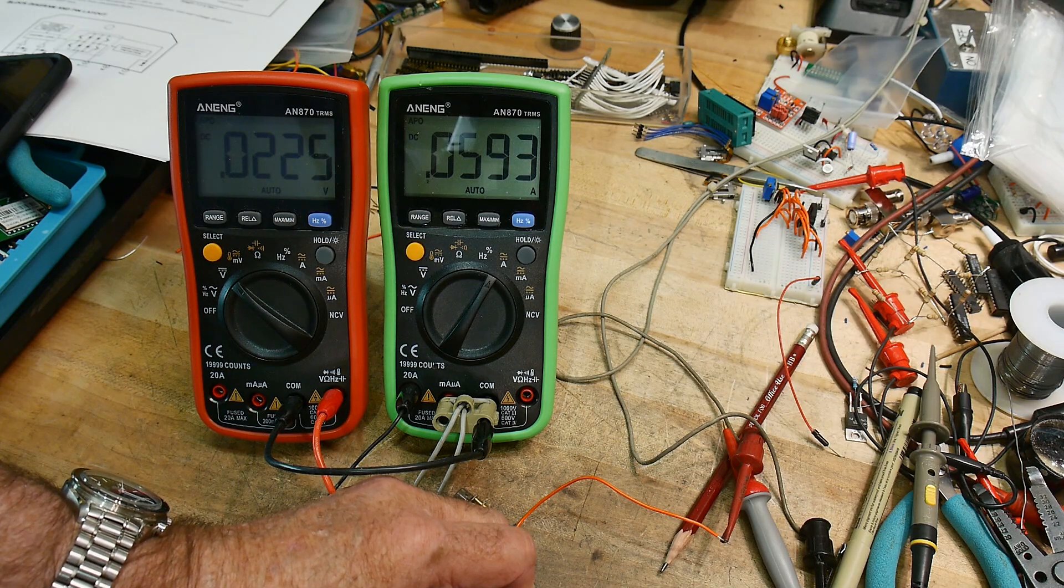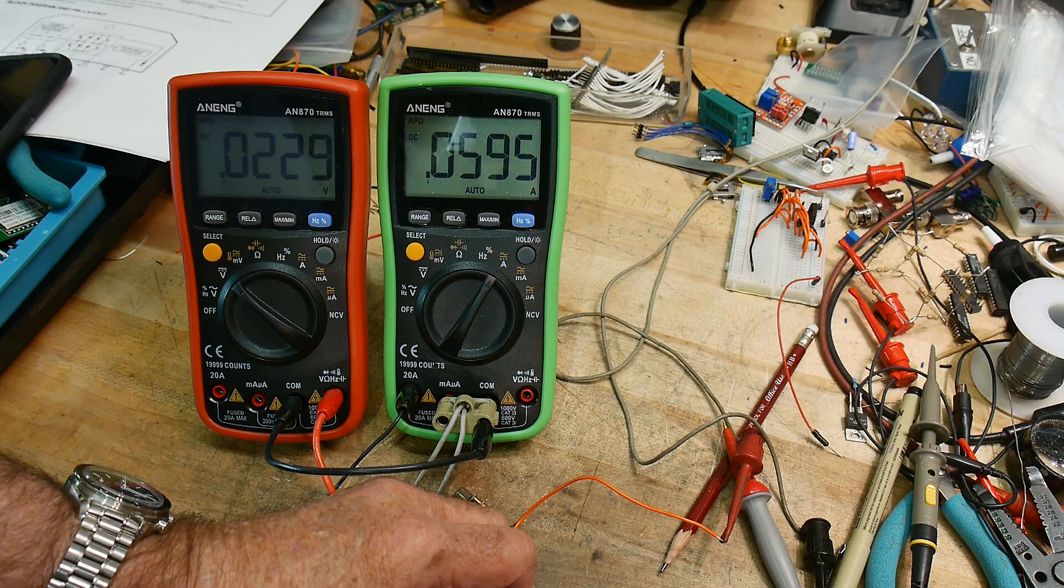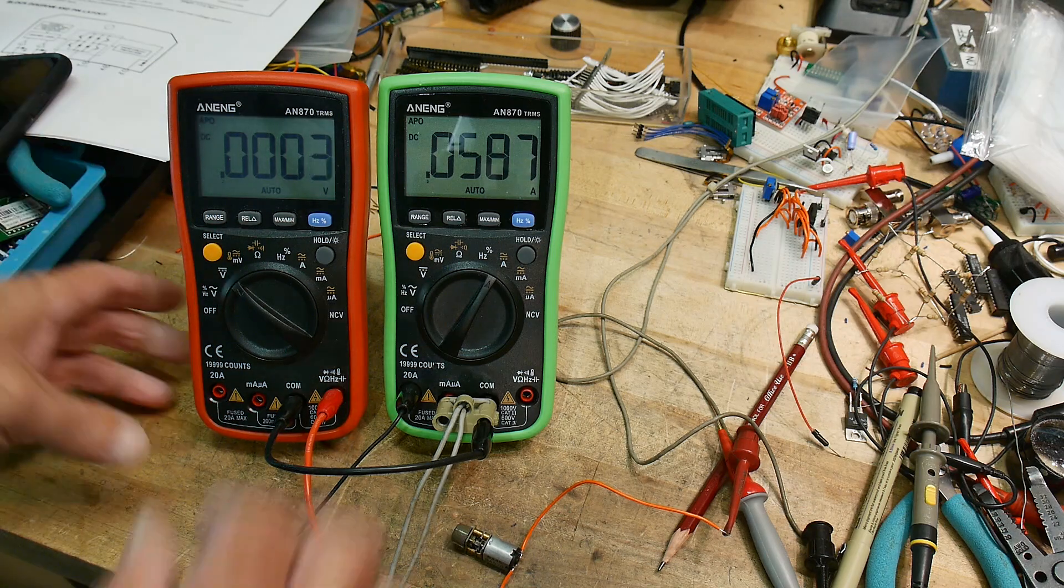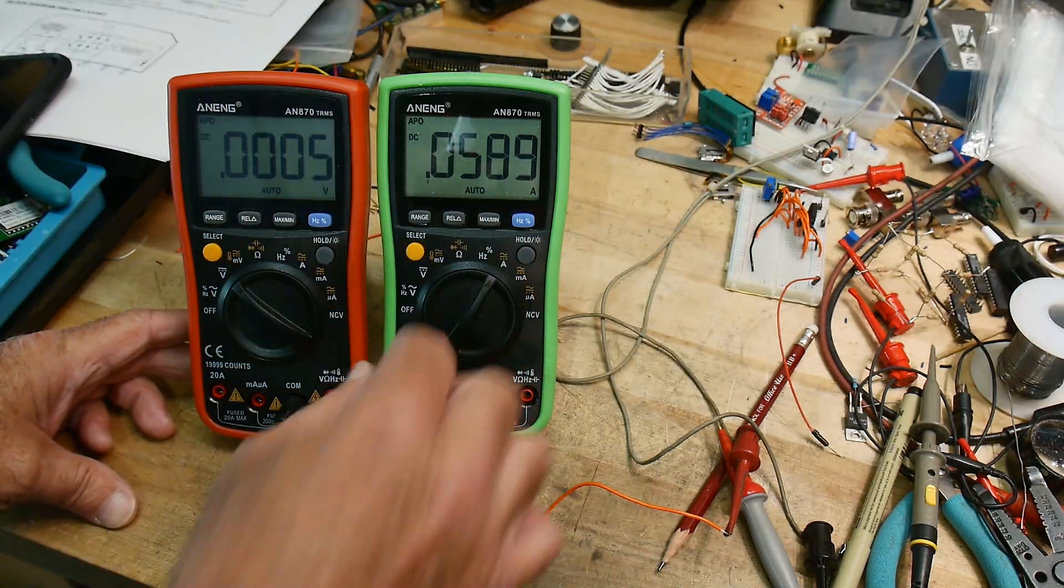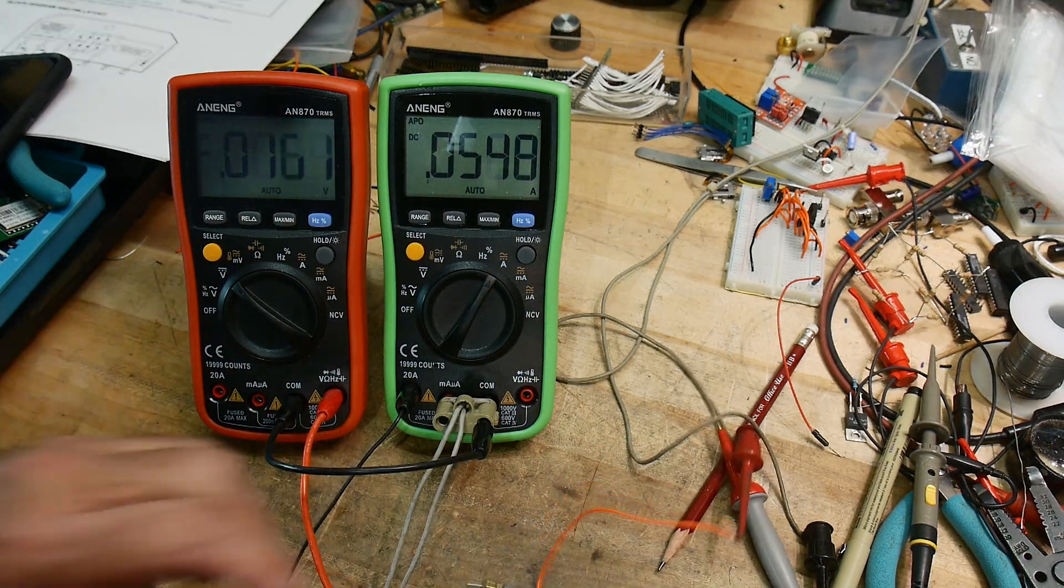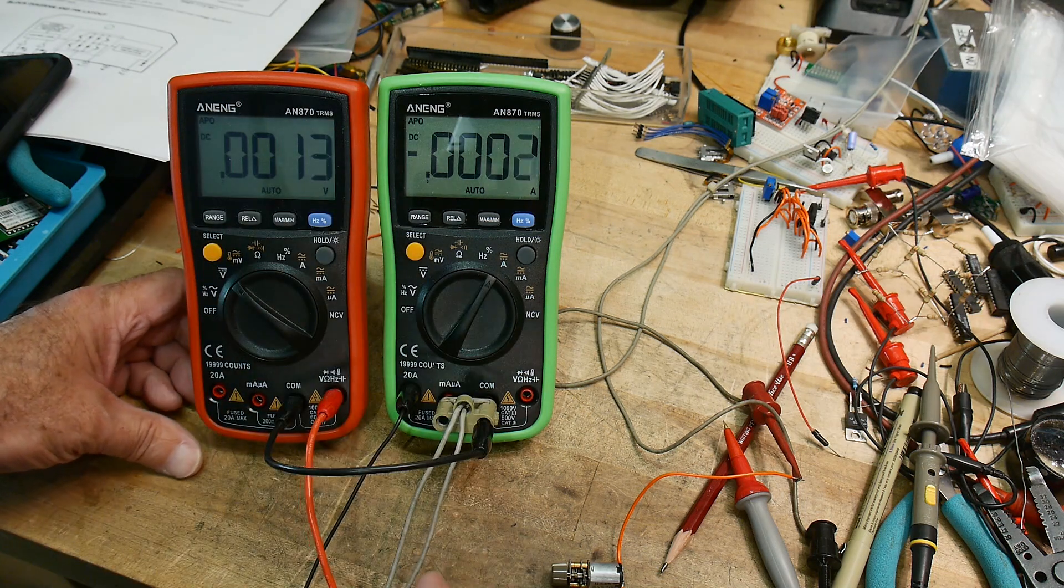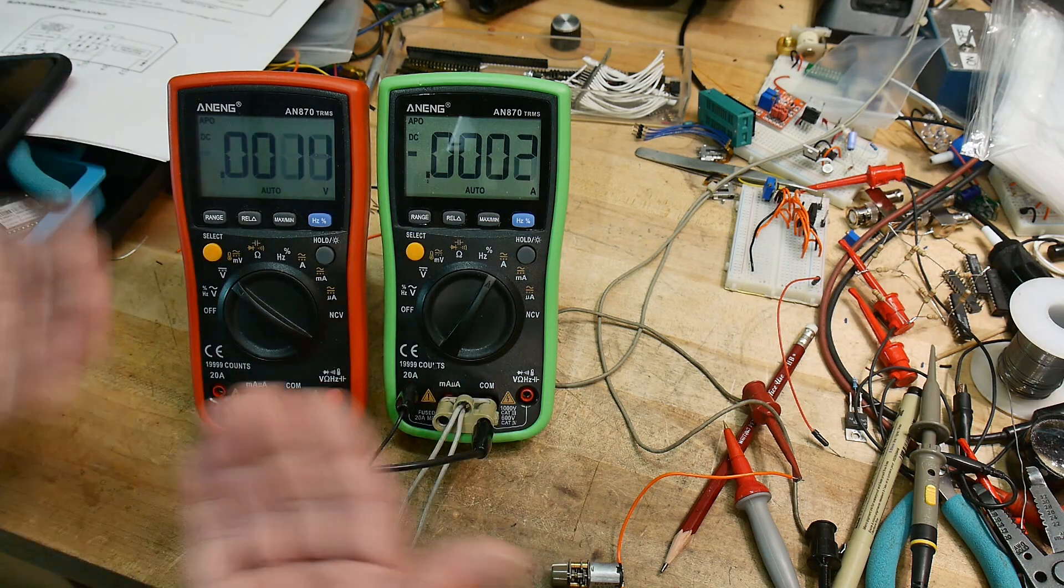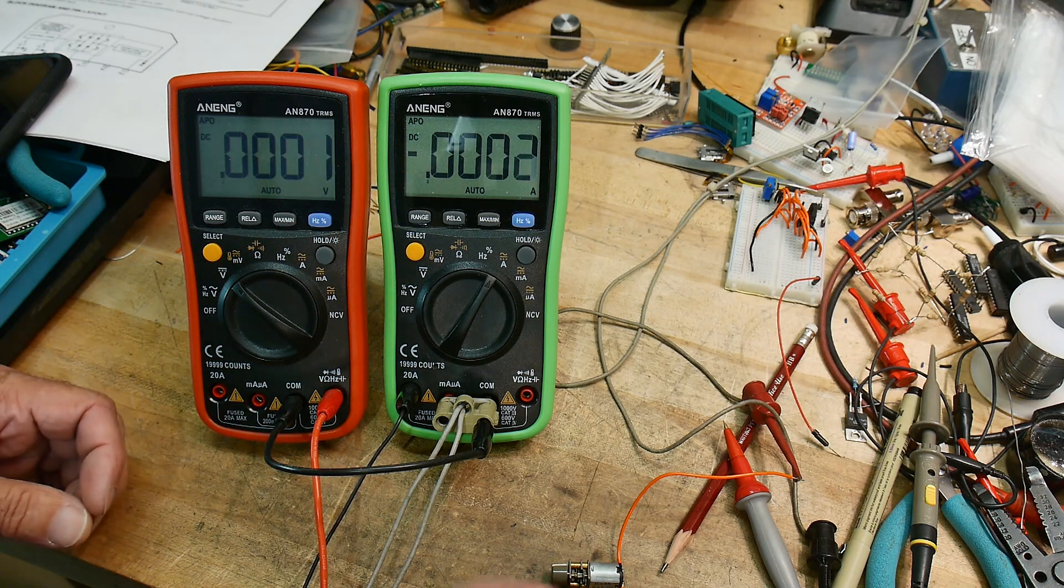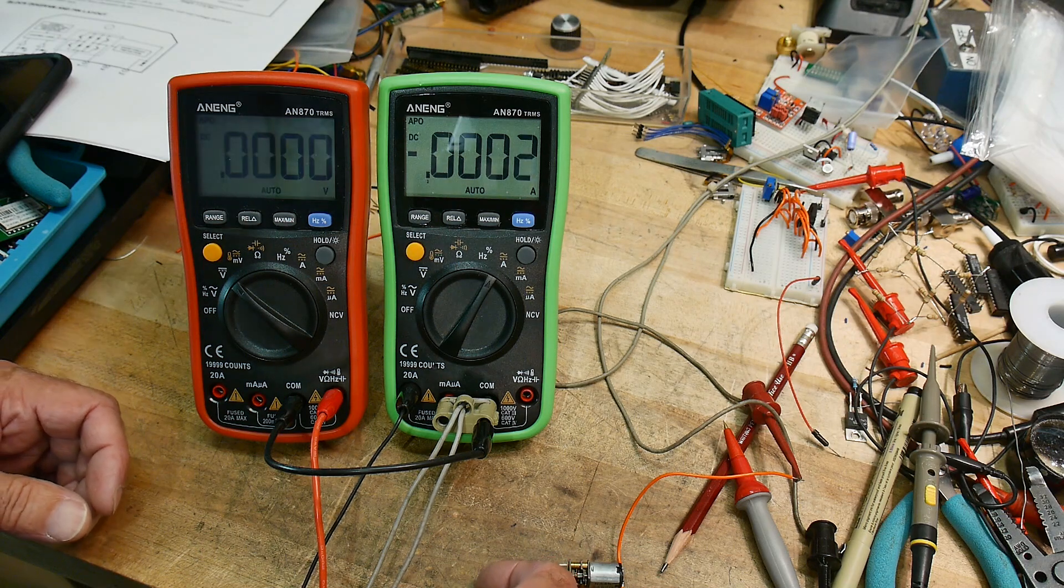So very little volts. Now we're not getting very good accuracy. We had better accuracy on the other range, but we're dropping less. So let's turn this off. So you can see that you have to choose the range and be wary of dropping voltage when you actually do these current measurements.